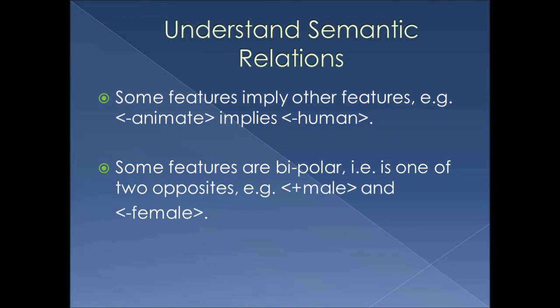Semantic features also help us understand semantic relations, meaning that some features imply other features. For example, minus animate implies minus human — if an object doesn't move, it certainly isn't human. Additionally, some features are bipolar, meaning they are one of two opposites. If something is plus male, it's automatically minus female.